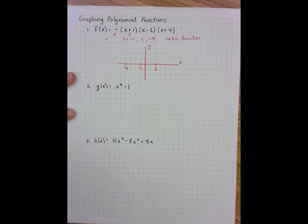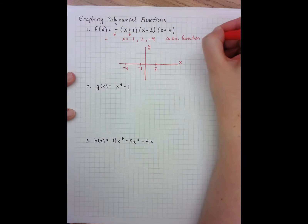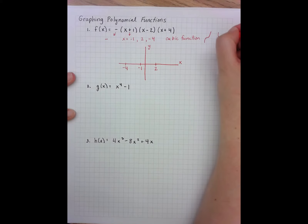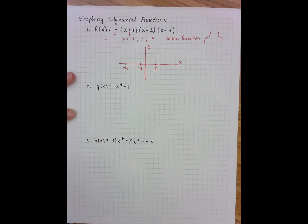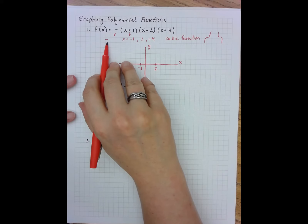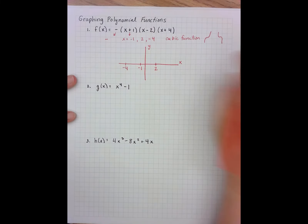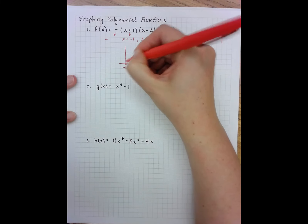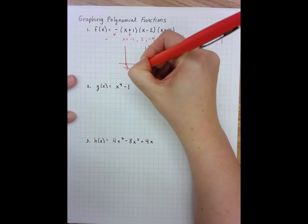Setting up my axes, when I'm graphing polynomial functions I'm essentially just sketching, because I'm not sure how high or low the various humps in the function go. I do know that cubic functions come in two shapes: either going up from left to right, or going down from left to right. In this case, because the function has a negative leading coefficient, it goes down from left to right.